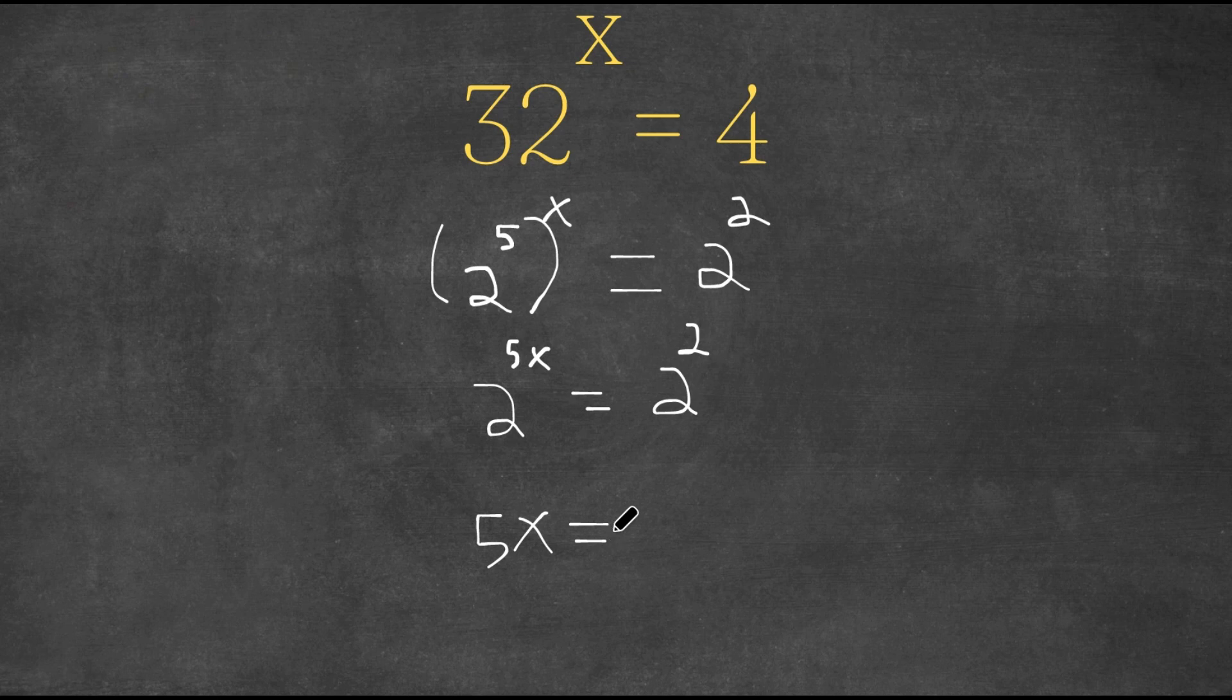If you still don't understand why I converted the 32 into 2 to the power of 5 and the 4 into 2 squared, it's because we want the same bases. 2 is a common base for both of these numbers, so I converted 32 into 2 to the power of 5 and 4 into 2 squared. Now as you can see, because both of them have the same bases, we can simply set the exponents equal to themselves.